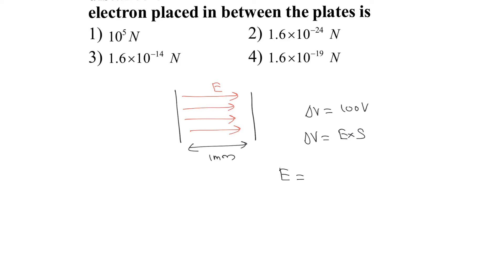The electric field will be equal to potential difference divided by distance. Potential difference is 100 and distance is 1 mm means 10 raise to minus 3 meter. So the value of electric field is 10 raise to 5.